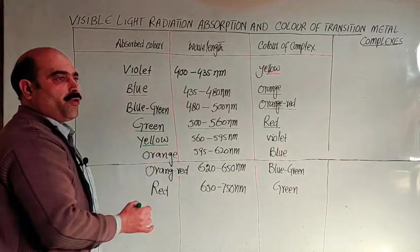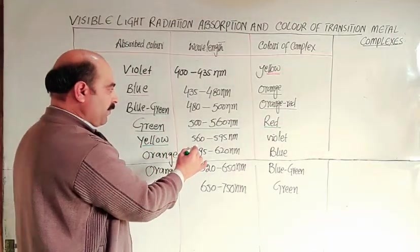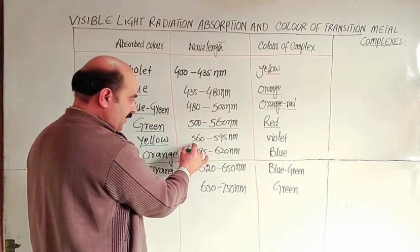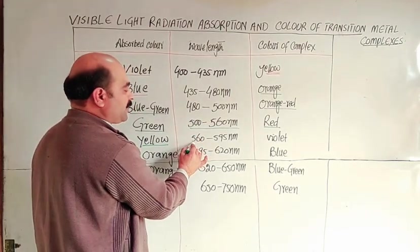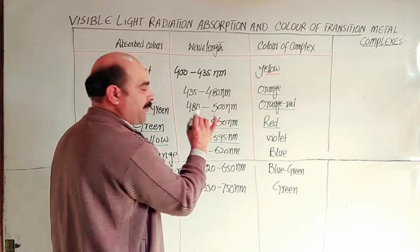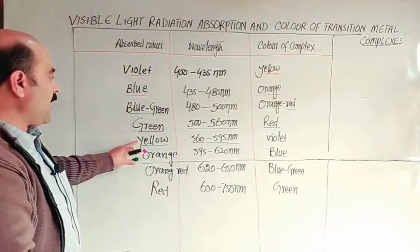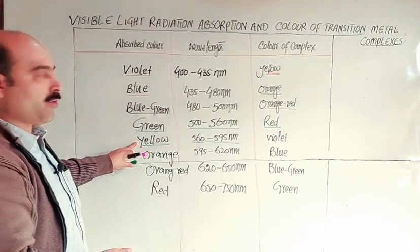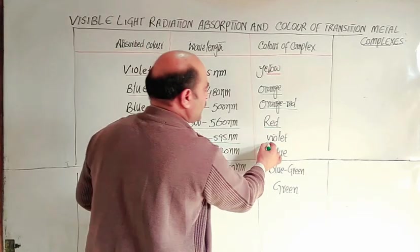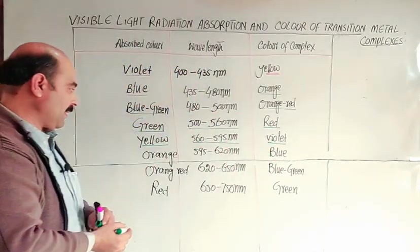If a coordination complex absorbs radiation from the visible range whose wavelength is 560 to 595, this is the yellow range, meaning yellow color is absorbed. The complex will be violet, the complementary color of yellow.